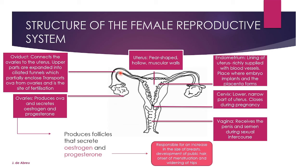Inside the oviducts is where fertilization takes place. The egg cell moves along and the sperm cells swim up, meeting in the fallopian tubes. The uterus is a pear-shaped, hollow, muscular-walled structure. The lining of the uterus is the endometrium, which is richly supplied with blood vessels. It is the place where the embryo implants and the placenta forms. If the egg cell is fertilized, it moves down and implants into the endometrium.